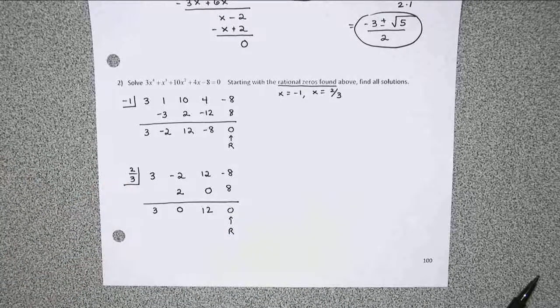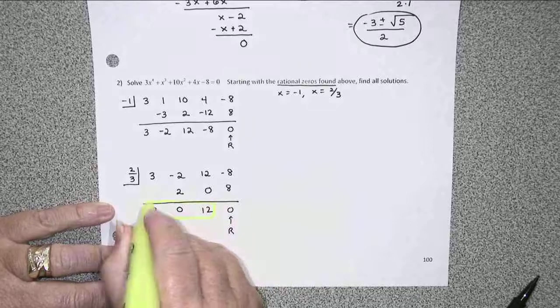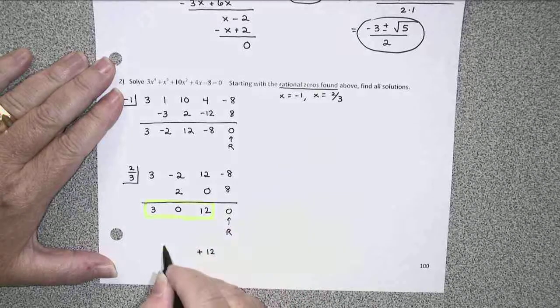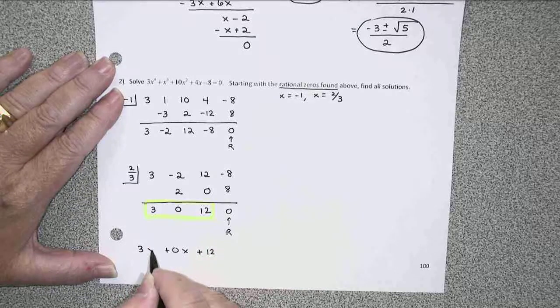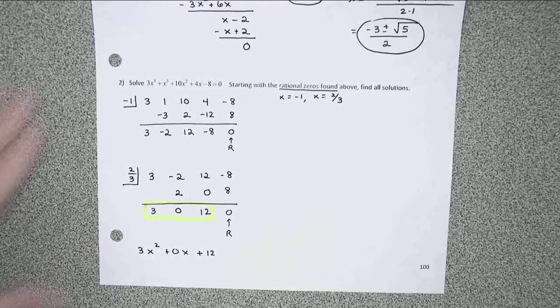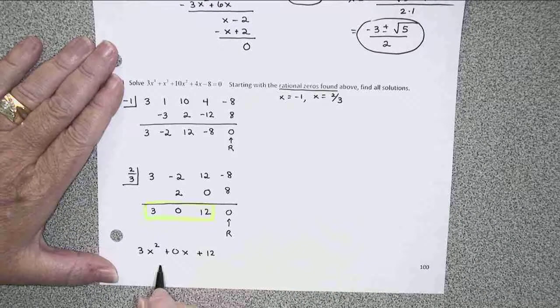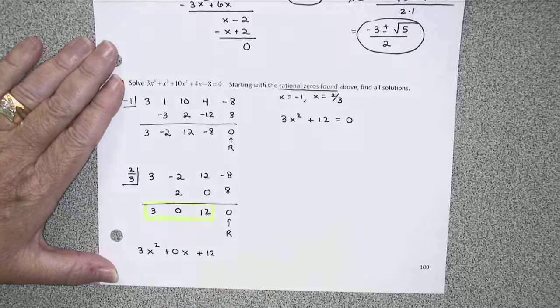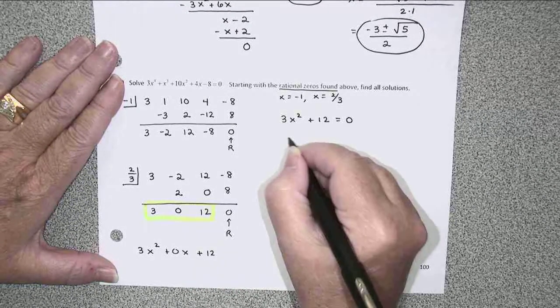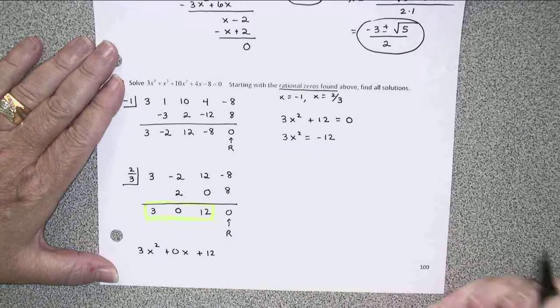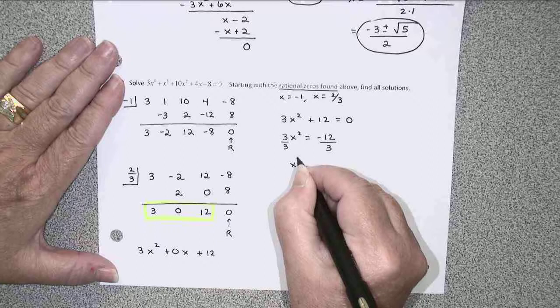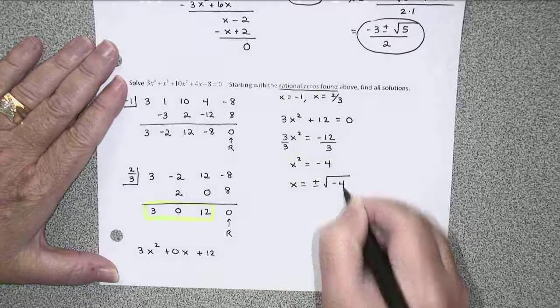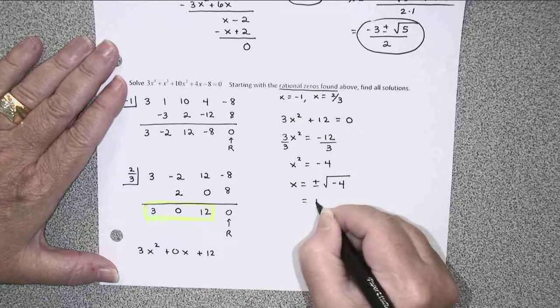So let's see what we've got left here. The 12 is our constant term. There would be a 0x to the first, and then a 3x squared. So at this point, in addition to the two zeros that I already found, I would have 3x squared plus 12 equal to 0. I think I can solve this one by the square root method. Let's subtract off the 12, and then divide by the 3. So x squared is negative 4, and x would be plus or minus the square root of negative 4, which is plus or minus 2i.